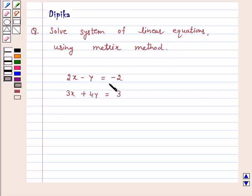2x minus y is equal to minus 2. 3x plus 4y is equal to 3. Solution.